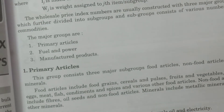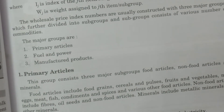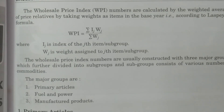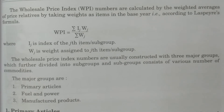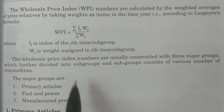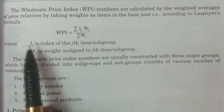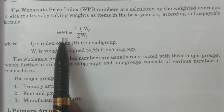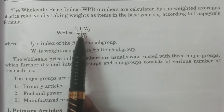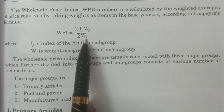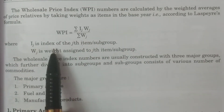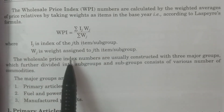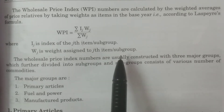Now, what formula is used to calculate the Wholesale Price Index numbers? The Laspeyre's formula is used for calculating Wholesale Price Index numbers, which is equivalent to: summation of Ij × Wj divided by summation of Wj, where Ij is the index of the jth item or subgroup and Wj is the weight assigned to the jth item or subgroup.